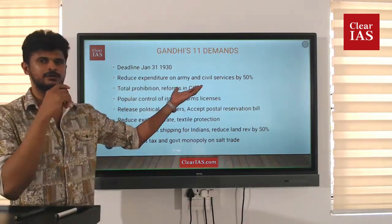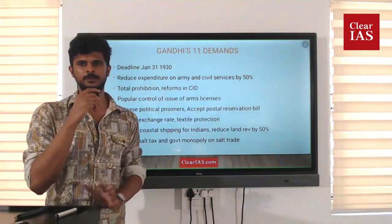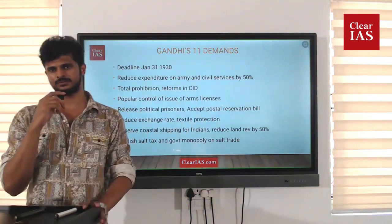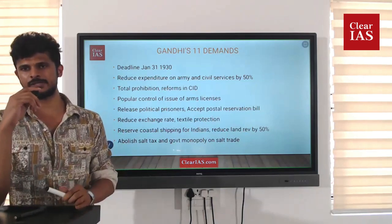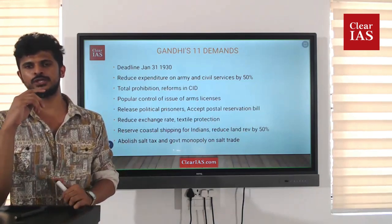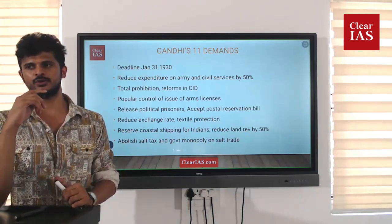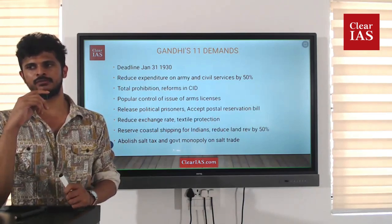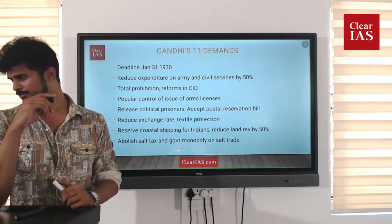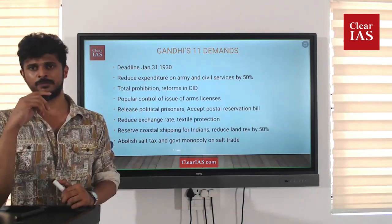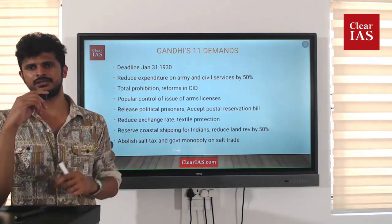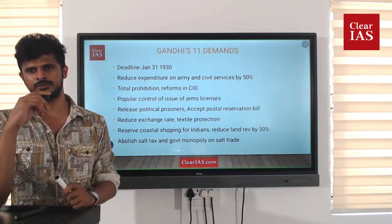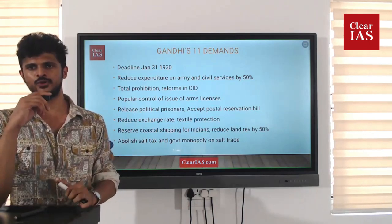The first demand was to reduce the expenditure on army and civil services by 50%, because most of Indian revenues were going to finance these expenses, which were not useful for Indians but only for the British. Most civil servants were British and they were investing their salaries back into Britain, which was also not useful to India.